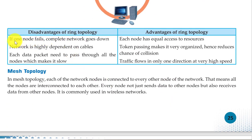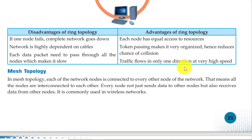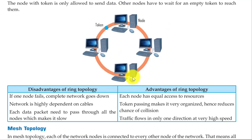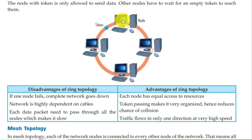Disadvantages of ring topology: if one node fails, the complete network goes down. The network is highly dependent on cables, and each data packet needs to pass through all the nodes, which makes it slow. Advantages: each node has equal access to resources, token passing keeps it organized and reduces the chance of collision, and traffic flows in only one direction at very high speed.